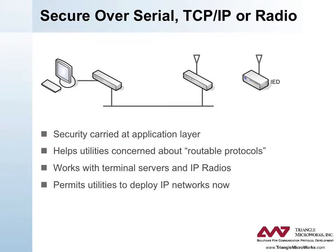Because the DNP3 authentication messages travel at the application layer, they are carried with the rest of the DNP3 message when terminal servers or IP-based radios are used. Some utilities are using these devices to avoid using routable protocols in some portions of their SCADA networks. Using DNP3 Secure Authentication ensures that there is a security solution even when terminal servers or IP radios are used. One advantage of DNP3 Secure Authentication is that it allows utilities to deploy DNP3 in a secure fashion over IP networks, providing an evolution path to other IP-based automation solutions such as IEC 61850 in the future.